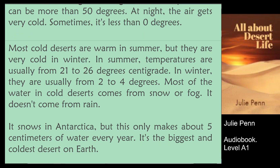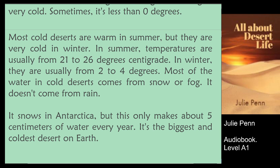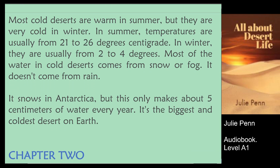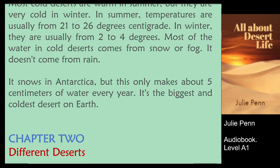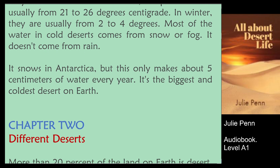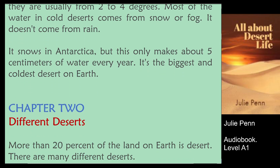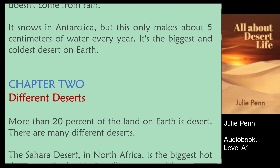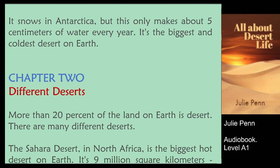In summer, temperatures are usually from 21 to 26 degrees centigrade. In winter, they are usually from 2 to 4 degrees. Most of the water in cold deserts comes from snow or fog, not from rain. It snows in Antarctica, but this only makes about 5 centimeters of water every year. It's the biggest and coldest desert on Earth.